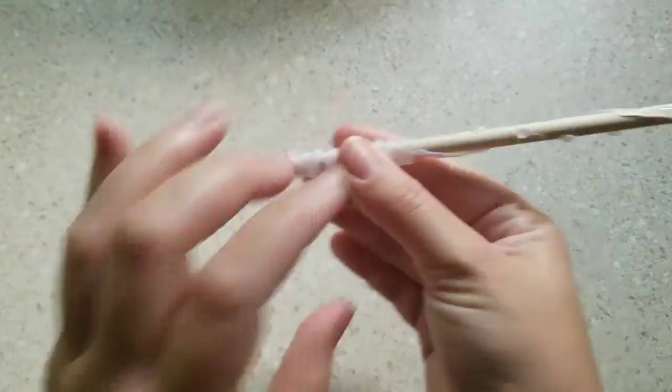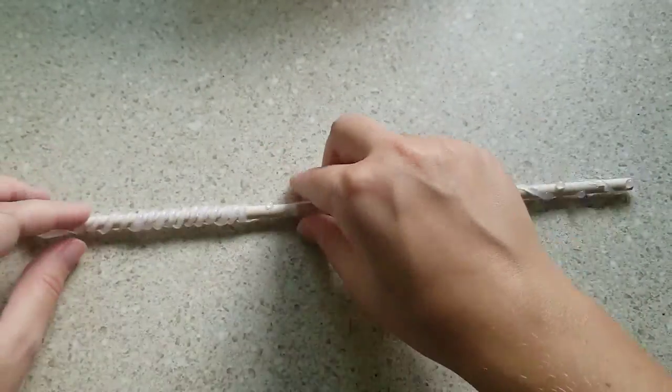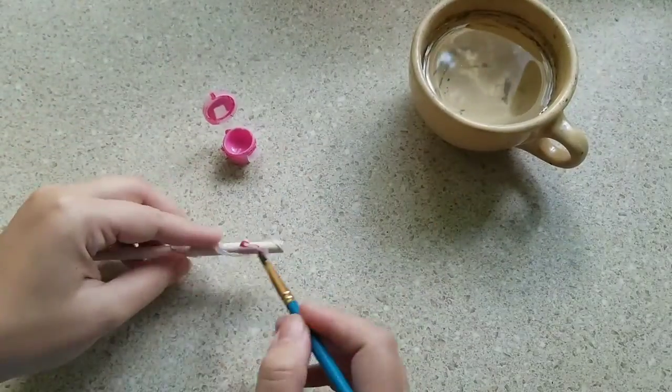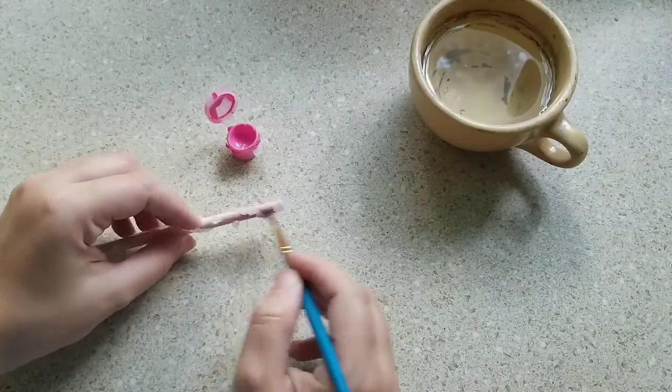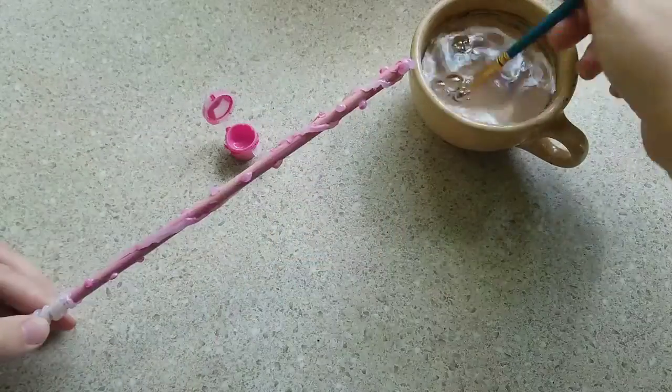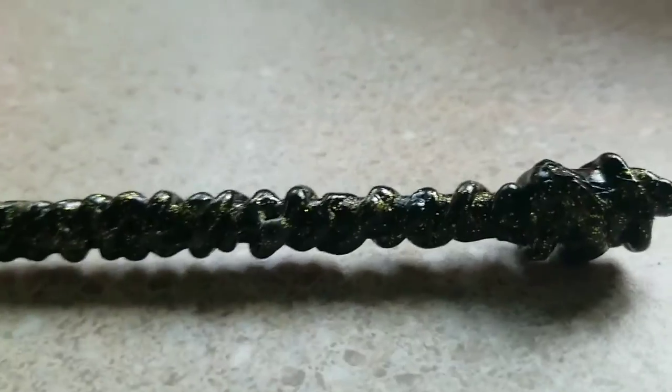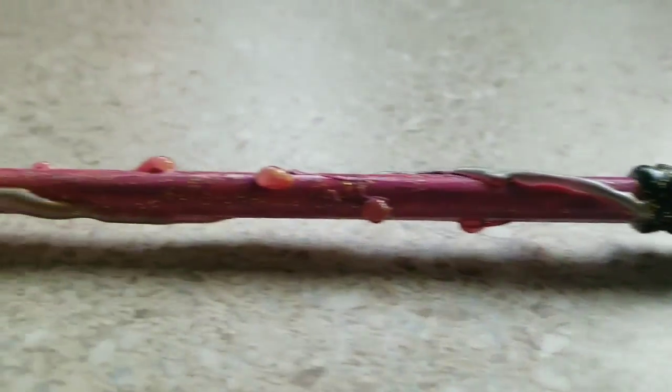Once you've got your desired look down and the glue has had time to dry, go ahead and start painting it. I added a little extra off camera to the handle of the wand so that I had a better grip on it and I gave it more of a swirly look and then I painted it pink with a black handle and gold glitter.